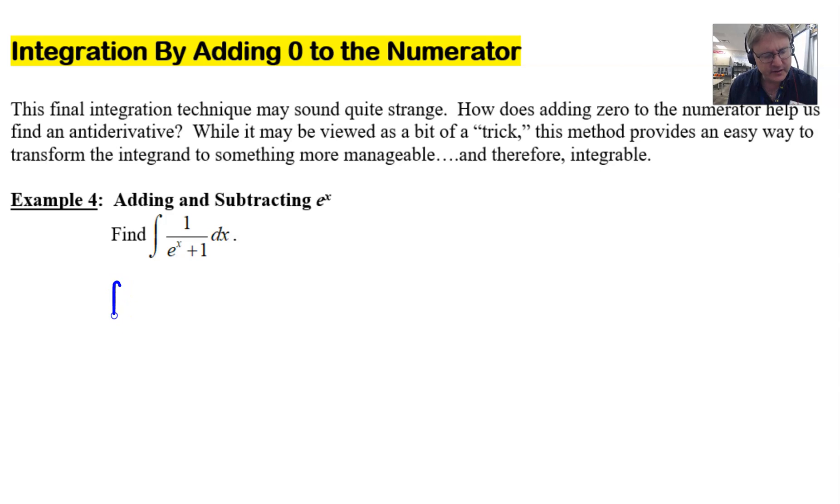What if the numerator were to have added e^x? Okay, so let's think about that. 1 plus e^x in the numerator over e^x plus 1. Well, that's not bad, right? That's just simply 1. We could integrate that. But wait a minute. We can't go around adding e^x unless we immediately subtract e^x.